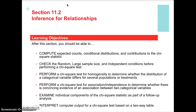We're going to need to check our conditions for inference, just as we did before, and actually perform the test for both homogeneity and independence to answer our research questions. For homogeneity, we're asking whether the distribution of a categorical variable is different for different populations or treatment groups. For independence, we want to determine whether there is a relationship or an association between two categorical variables. Then we'll do a follow-up analysis based on the components.